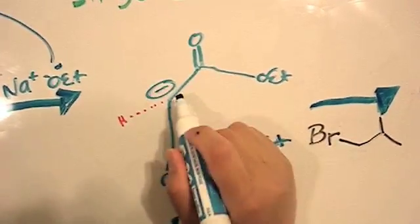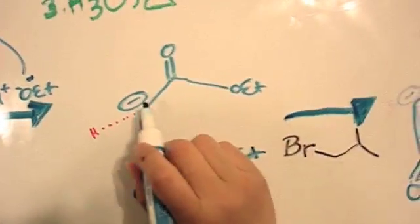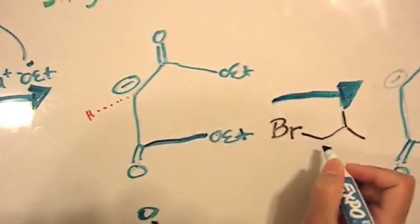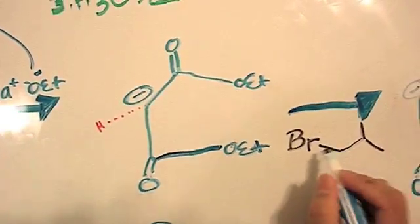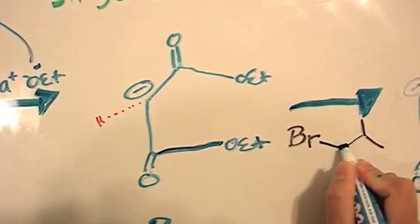Due to the negative charge on the alpha carbon, the enolate will then act as a nucleophile and attack an electrophile. Where is the electrophile, you might ask? The electrophile is here on the alkyl halide. It is this carbon right here.